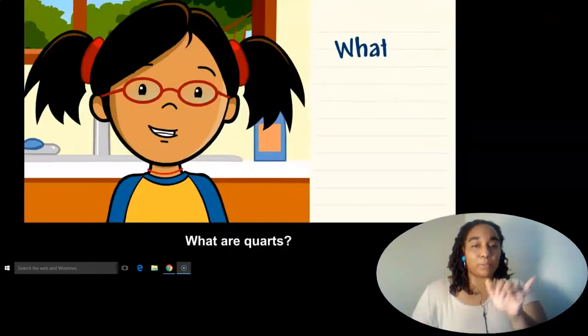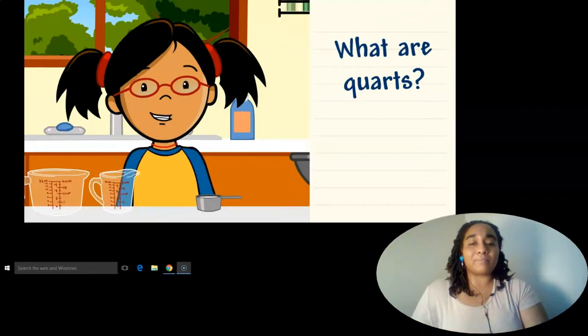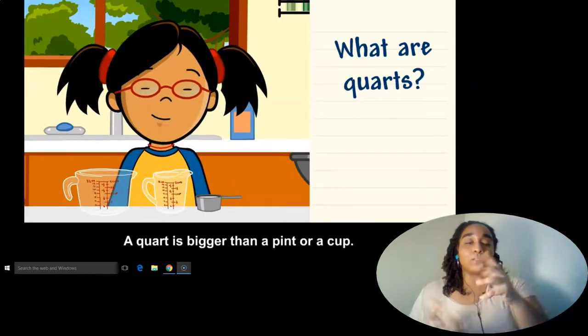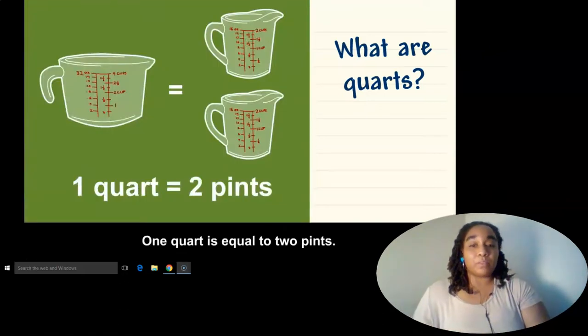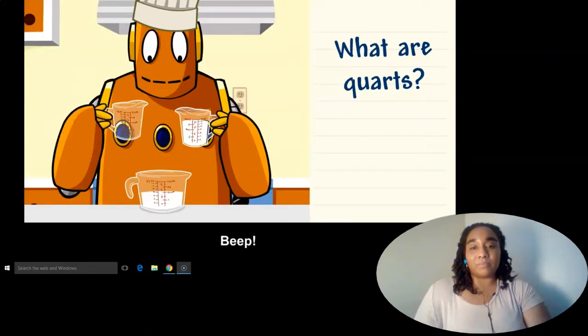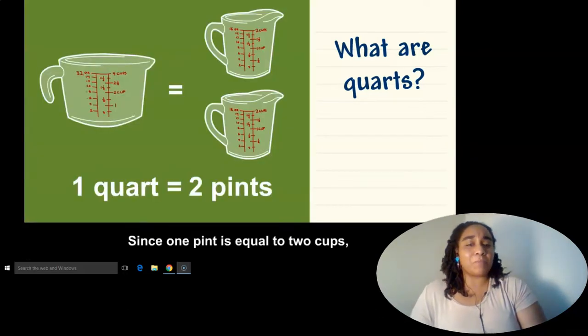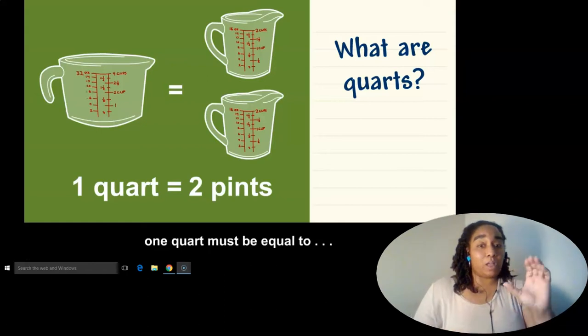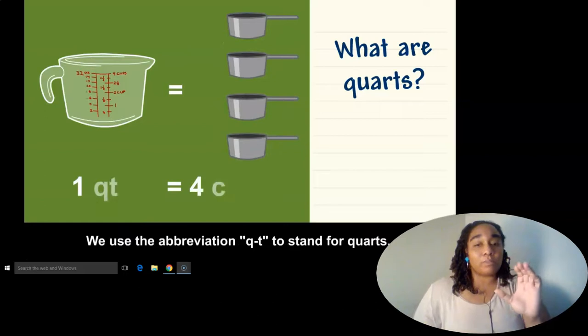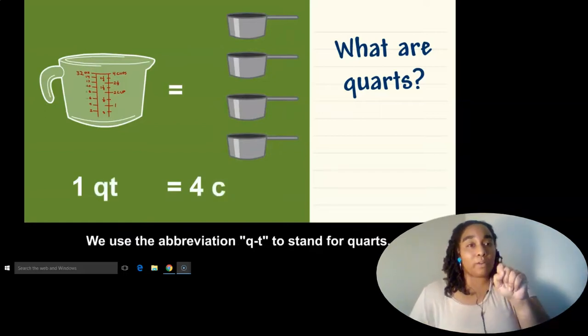What are quarts? A quart is bigger than a pint or a cup. One quart is equal to two pints. Since one pint is equal to two cups, one quart must be equal to four cups. We use the abbreviation QT to stand for quarts.